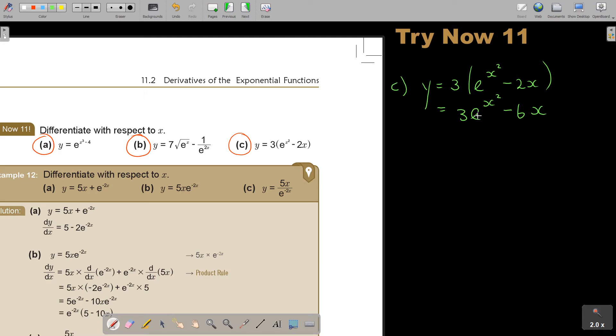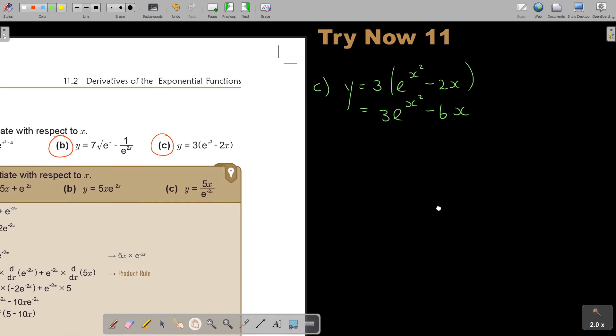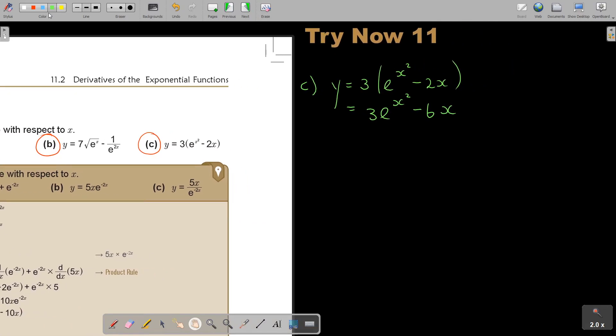So if I use the chain rule here, I'm just going to show you on the side. You can do it on the short way, but I just want to show you here. So for example, you differentiate this. If you use the chain rule, you can use it like this. 3e^u and u is equal to x squared.